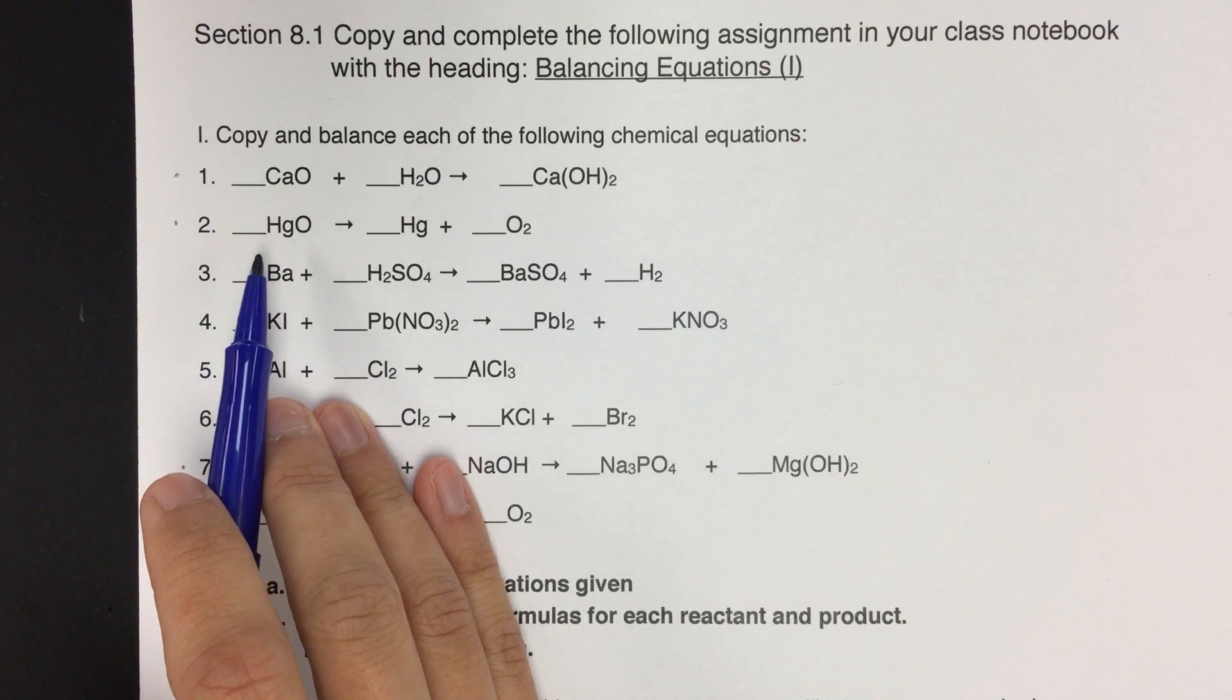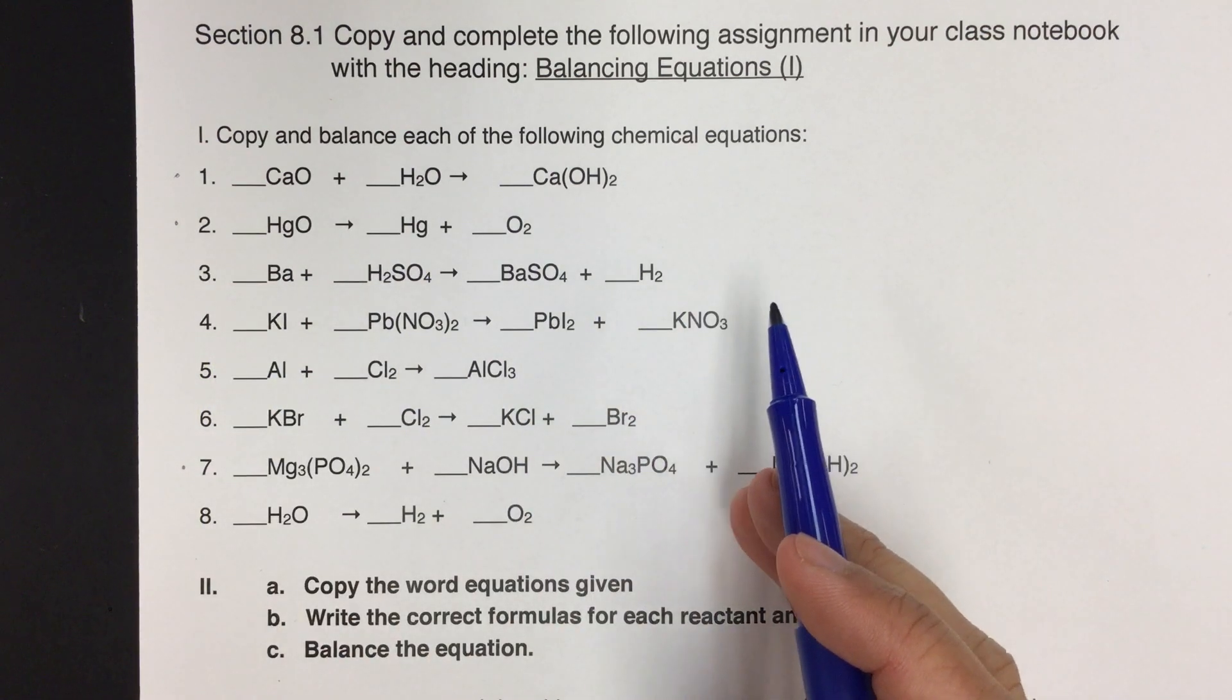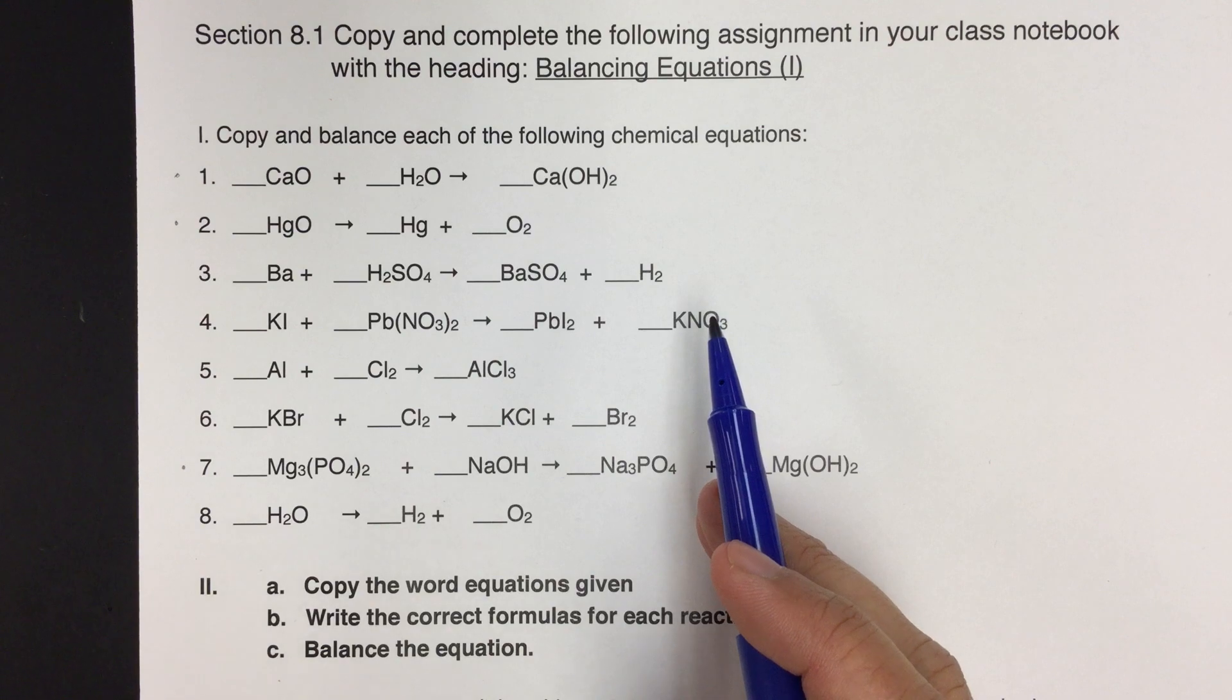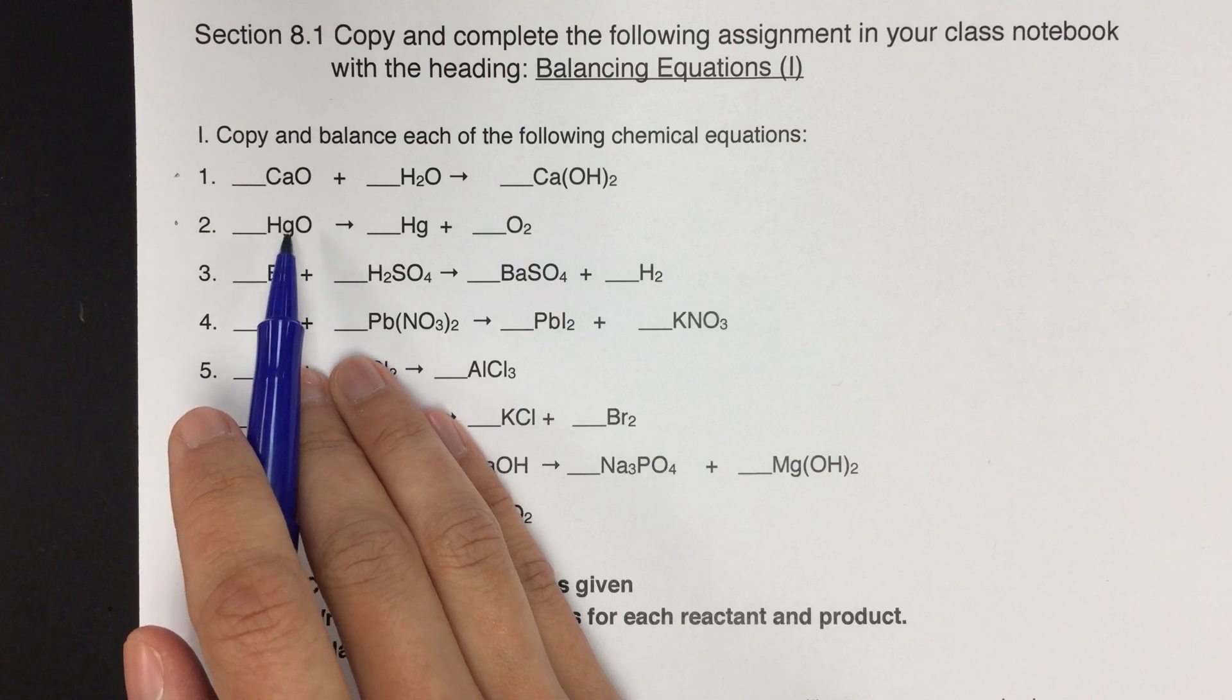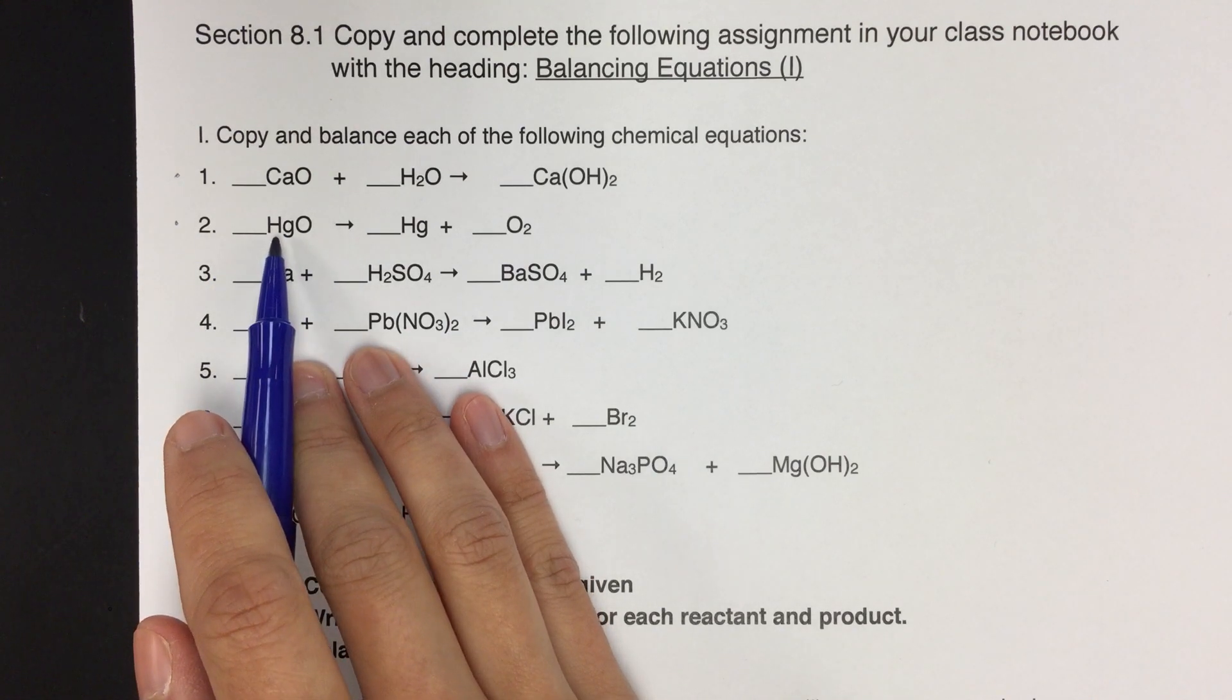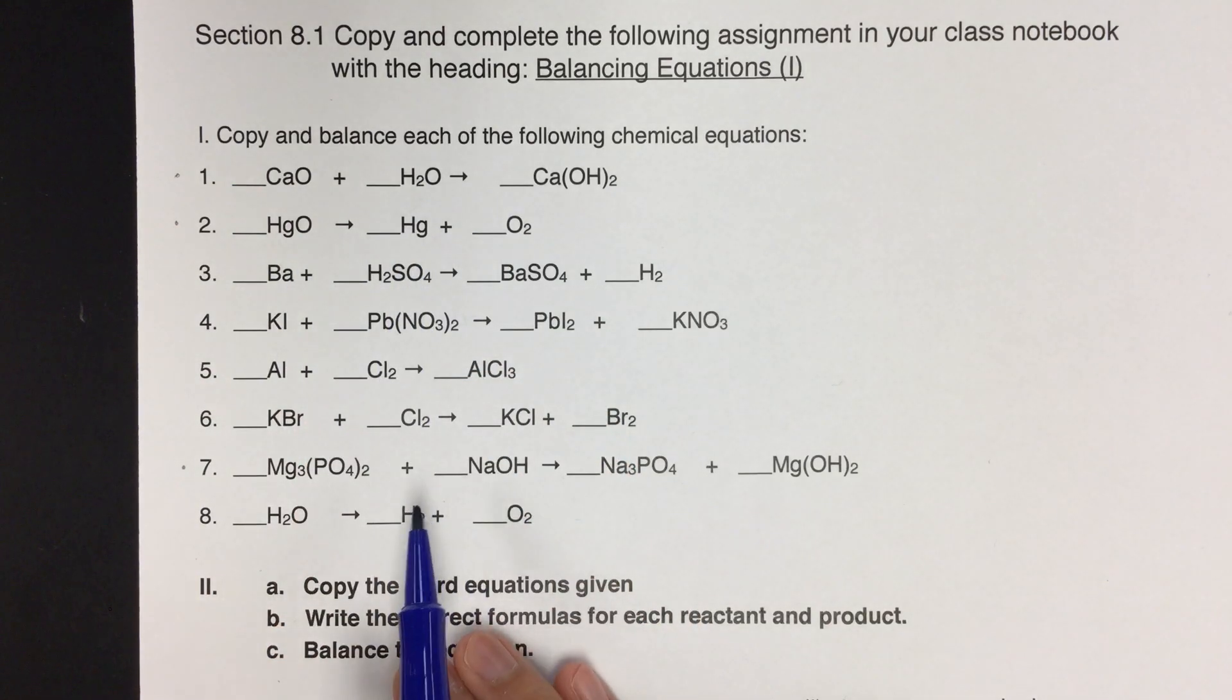So we're going to use our same hints, go one at a time. And this is going to be a lot of kind of back and forth you'll see in balancing. So you can just pick what to start with because everything is pretty simple in this one. I'm going to just go ahead and start with the Hg mercury here. So on the left side of the reaction, again, we're looking at the left side of the arrow, there's one Hg. On the right side, also one Hg. So that looks good so far.